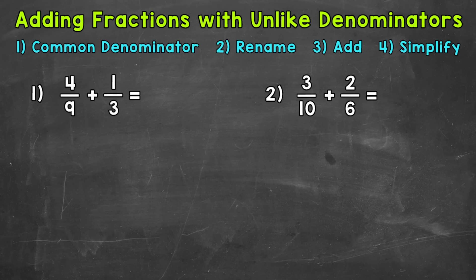We can find a common denominator by finding the least common multiple between our denominators. As far as why we need a common denominator, that's a topic for another video — I'll drop that link down in the description. You may recognize the least common multiple between denominators right away when you see the problem, but if not, you can always write out your lists of multiples in order to find it.